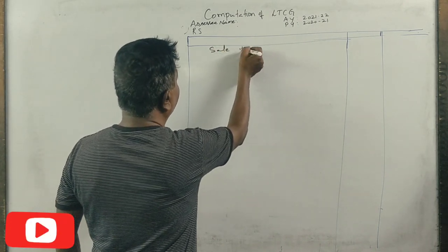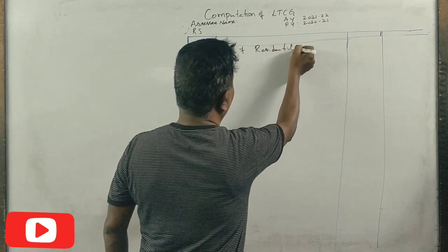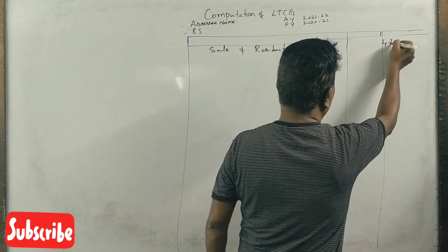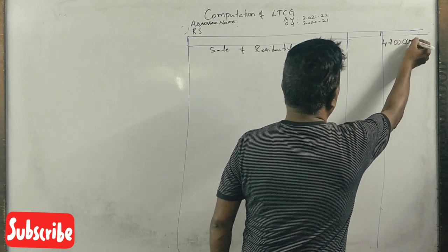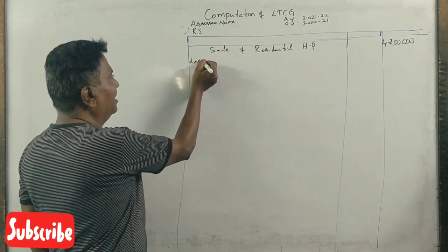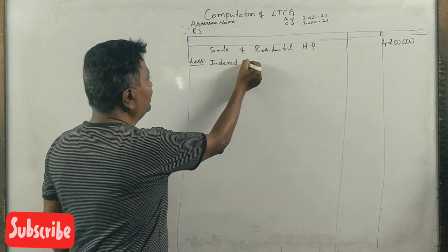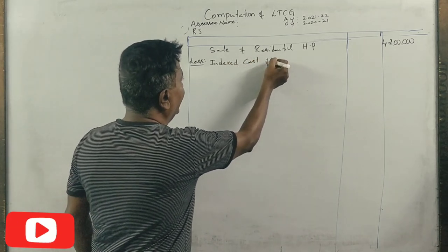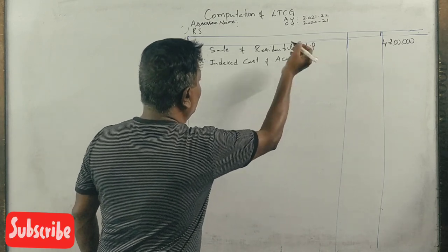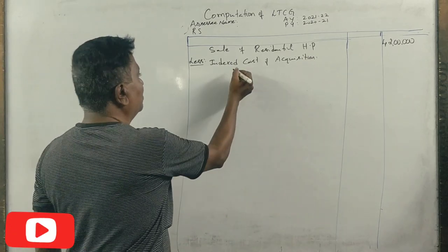So first of all, the sale of residential house property is 42 lakh rupees. Sale expenses not given, so we directly calculate indexed cost of acquisition. The house was purchased for 4,50,000 rupees.